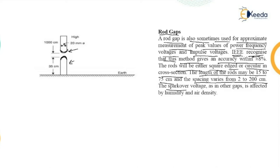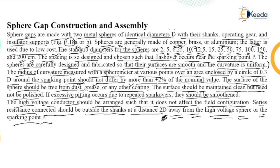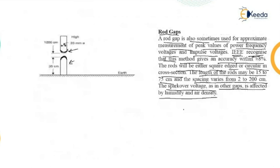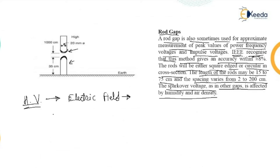The rods may be either square-edged or circular in cross-section. The length of the rods may be 15 to 75 centimeters and the spacing varies up to 200 centimeters. The spark over voltage, as in other gaps, is affected by humidity and air density.